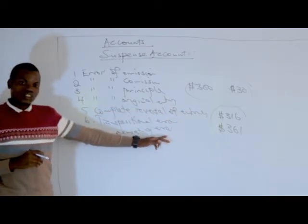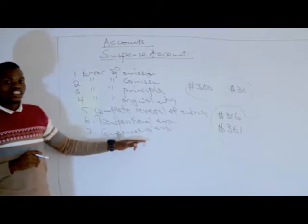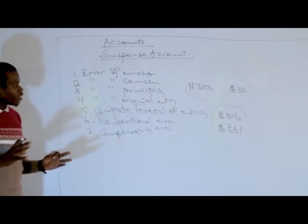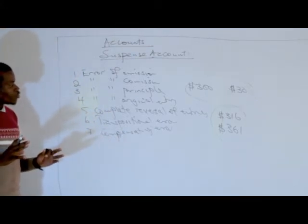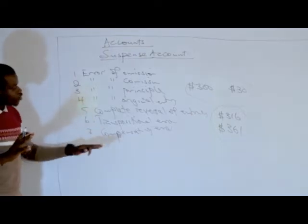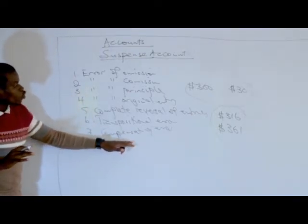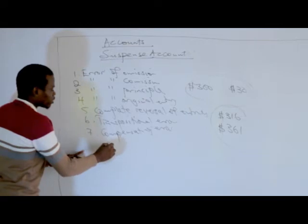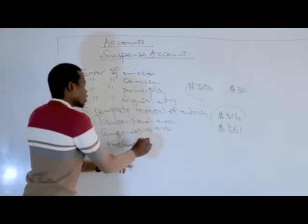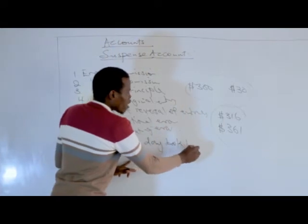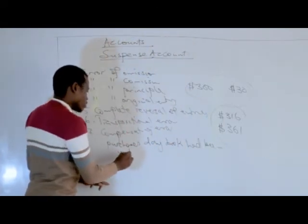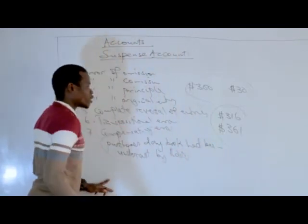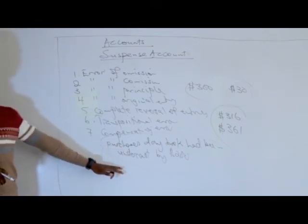And then lastly, what is known as the compensating error. Compensating error is a situation whereby errors cancel each other. For example, you might be given a transaction like a purchase daybook undercast 200. This is a good example of a compensating error. These are errors that cancel each other.